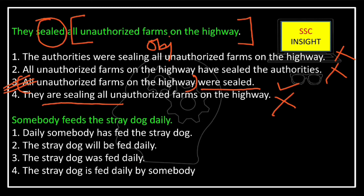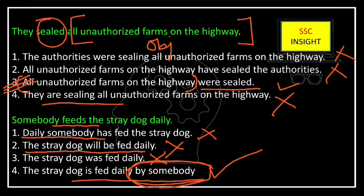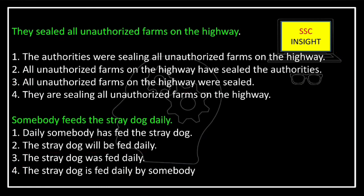Next: 'Somebody feeds the stray dog daily' — present indefinite, active voice. Option 1 uses present perfect and has incorrect structure — incorrect. Option 2 uses future tense — incorrect. Option 3 uses past indefinite — incorrect. Option 4: 'The stray dog is fed daily by somebody' — present indefinite, passive voice. Even though 'by somebody' is a vague pronoun and not necessary, if it appears in the option it is still correct. So option 4 is the correct answer.